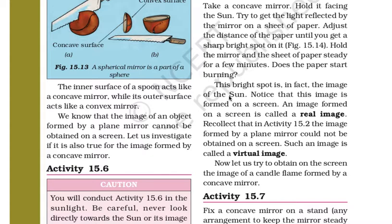An image formed on a screen is called a real image. The image formed by a plain mirror could not be obtained on a screen, so such an image is called a virtual image. The image that cannot be obtained on a screen is known as a virtual image, but an image that can be formed on a screen is called a real image.